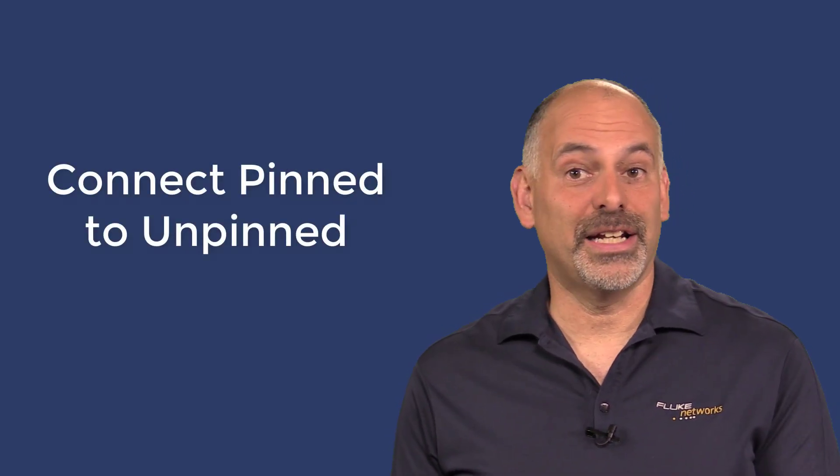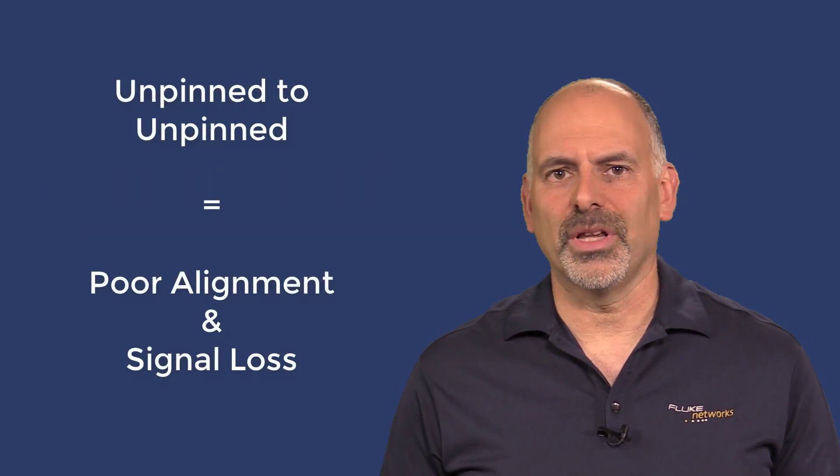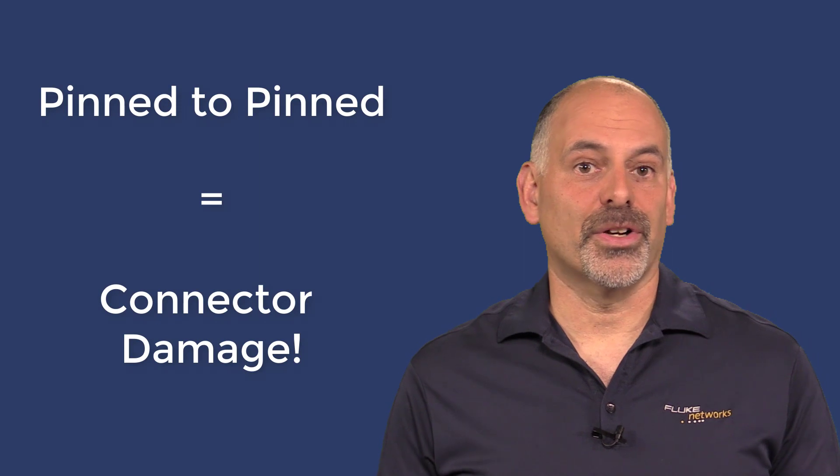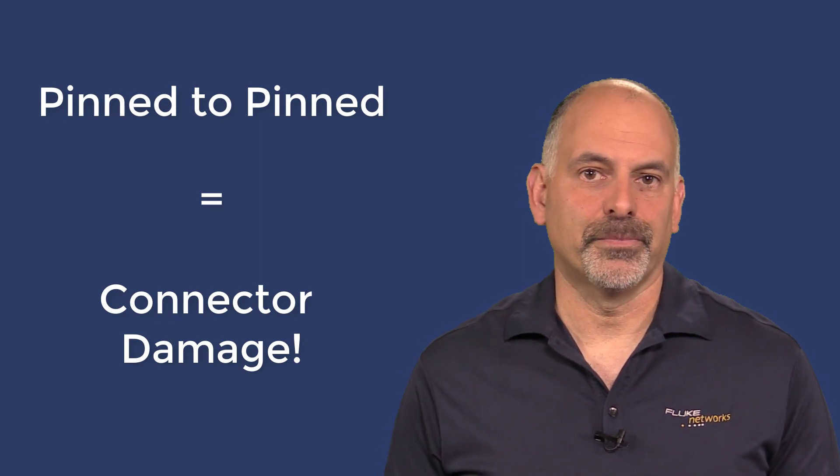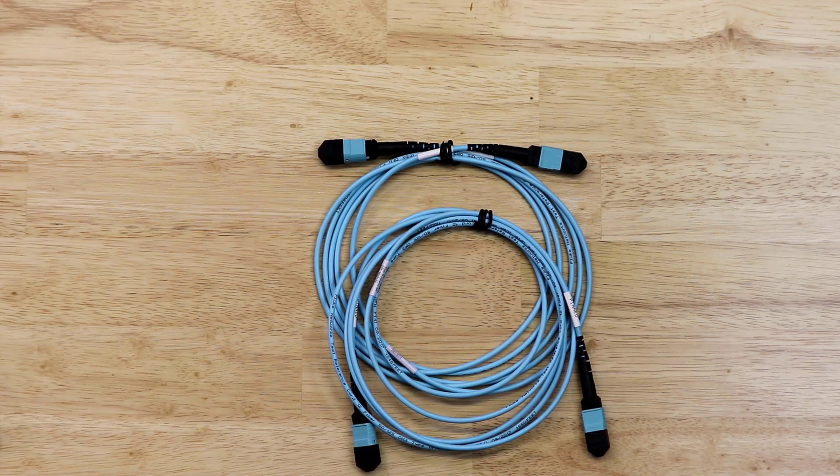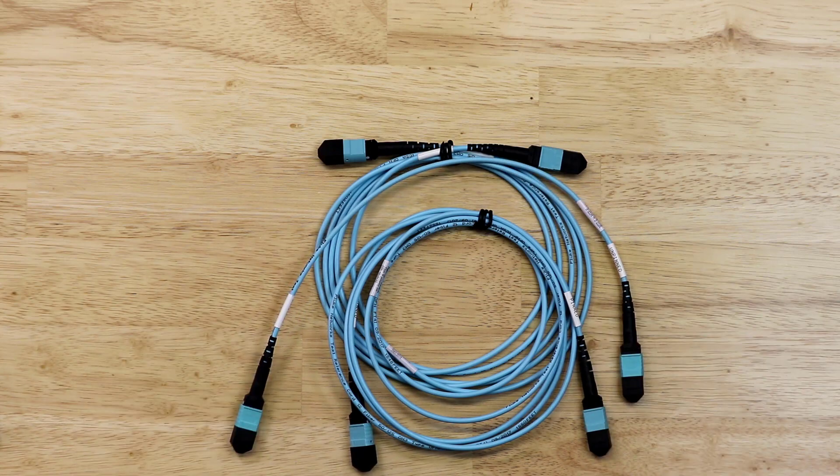Before we start testing the trunk cable, let's go through the cables I'll be using to test the pinned-to-pinned MPO trunk cable. This is a good time to talk about MPO connectors. It is important that we always connect pinned connectors to unpinned connectors. Connecting two unpinned connectors together will result in poor alignment and significant signal loss. Connecting two pinned connectors together may result in damage to one or both of the connectors. The first cable is a pinned-to-pinned test cable. The next cable is a pinned-to-unpinned test cable. Since we are using a pin-to-pin trunk cable, we'll also be using a short, unpinned-to-unpinned test cable as well.